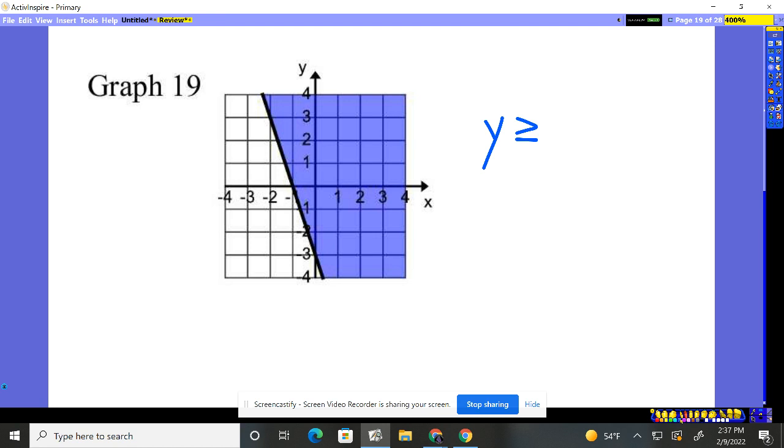So let's see, where does it cross? Crosses right here. Negative three is the Y intercept. And it seems to go up three over one, up three over one. And it's going up to the left. So that's going to be a negative three X. And then it crosses at negative three.